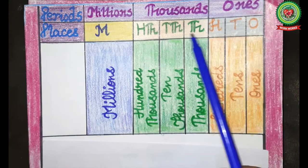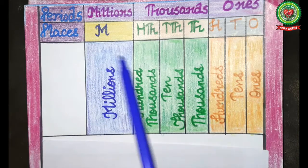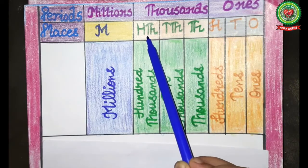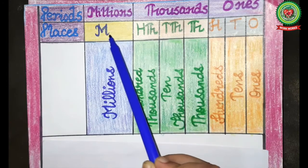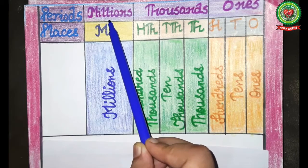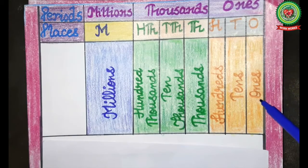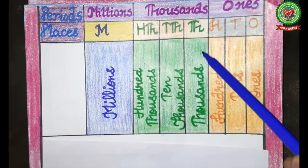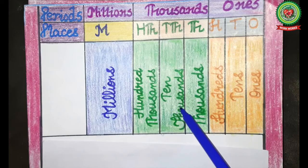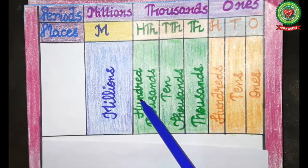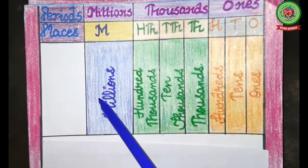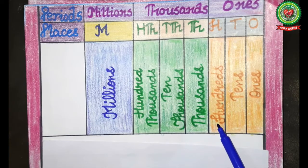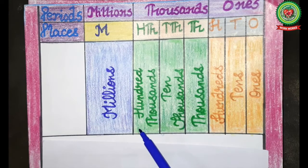In this chart, the seven places are grouped into periods. The first three places are grouped under the ones period. The next three places are grouped under the thousands period, and the next one place is grouped under the millions period. O means ones, T means tens, H means hundreds, TH means thousands, TTH means ten thousands, HTH means hundred thousands, and M means millions.